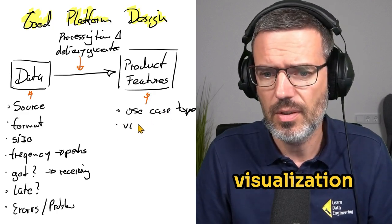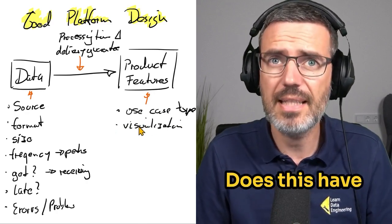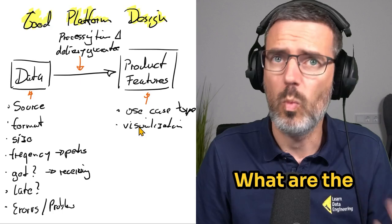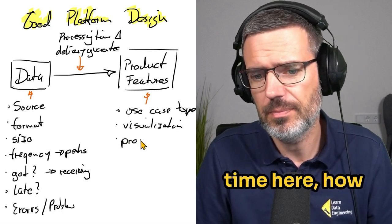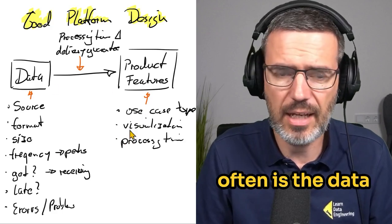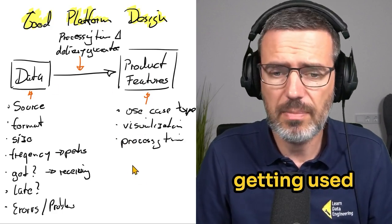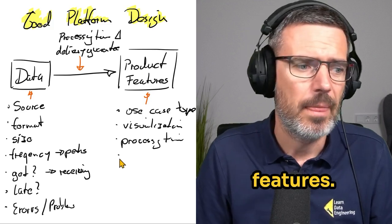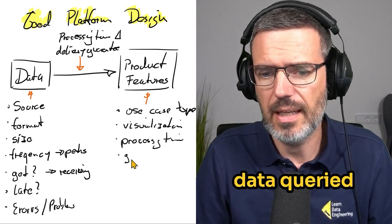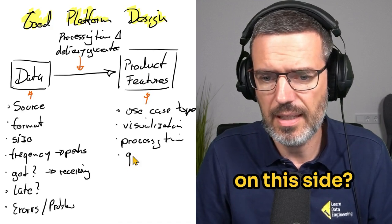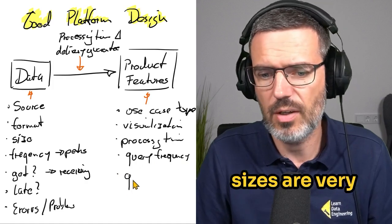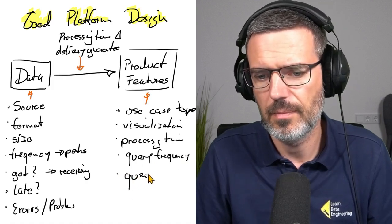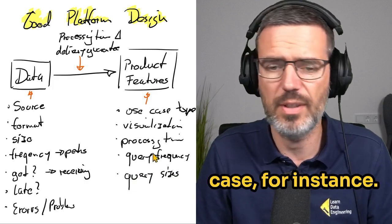Then, is this a visualization use case? Does this have visualization? What are the requirements for this? Again, the processing time here. How often is the data actually getting processed or getting used by the product features? How often is the data queried on this side? Query frequency. Also, query sizes are very important from a visualization use case, for instance.